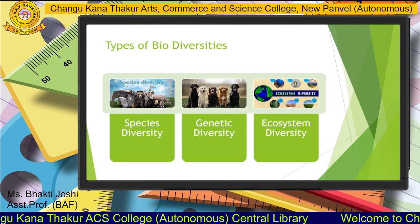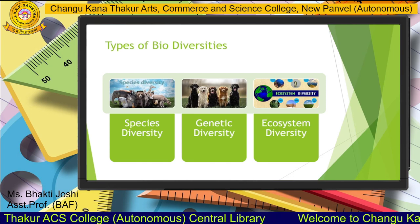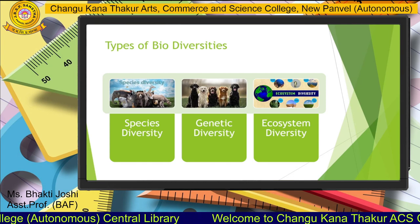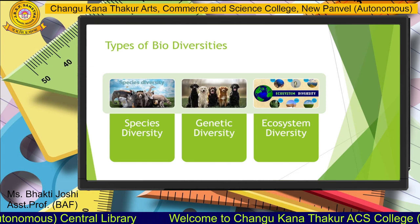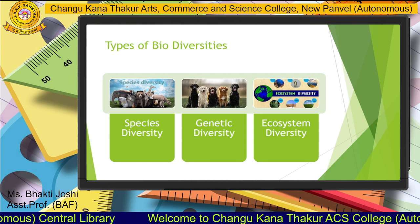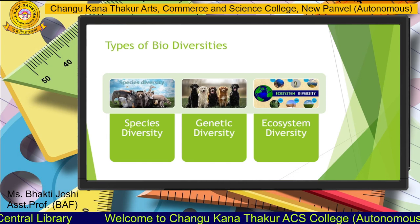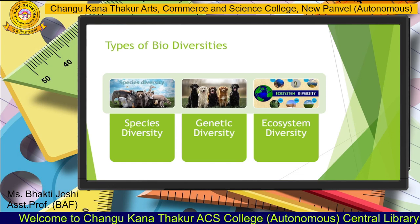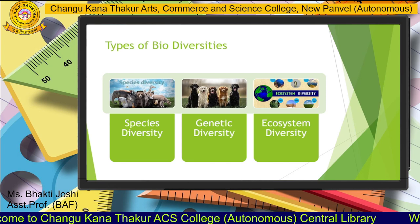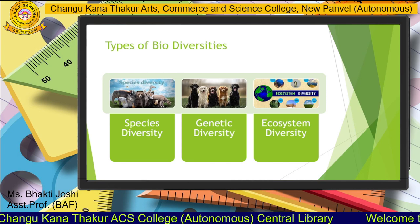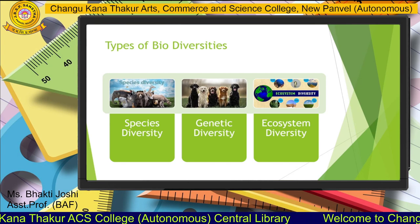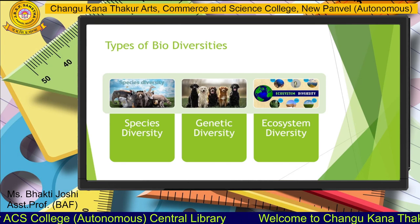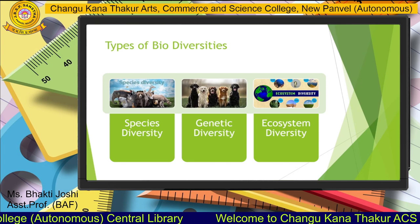Species diversity covers the variety of species — animals like elephants, reptiles, fishes, and other aquatic animals present in aquatic ecosystems all come under species diversity. As far as genetic diversity is concerned, it is a measure of the variety of different versions of the same genes within a species.